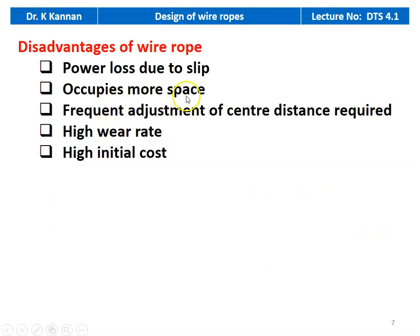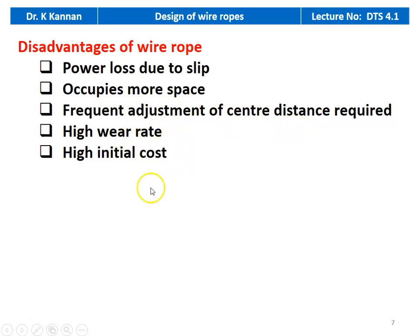The disadvantages of wire ropes: power loss due to slip — there is a possibility of slip, whereas in chain drive or V-belt drive the possibility of slip is negligible. They occupy more space. Frequent adjustment of the center distance is required. High wear rate and high initial cost — the entire setup of the wire rope drive system is costly.